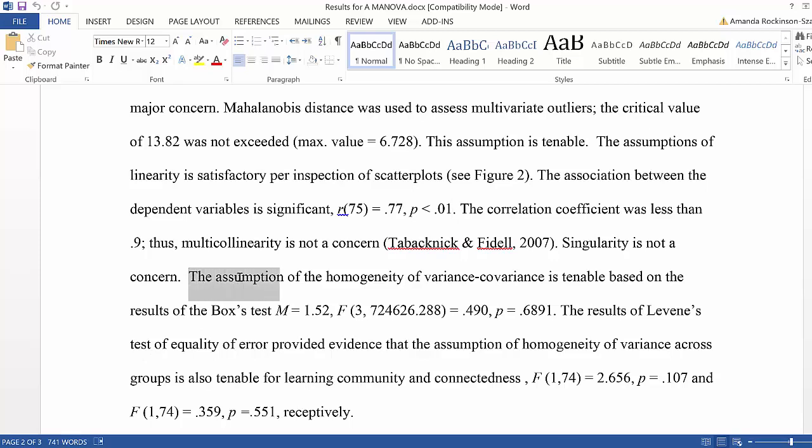Next, I discussed the assumption of homogeneity of variance covariance, noting that it is tenable based on the results of the Box's M test, and I report the results of Box's M here.